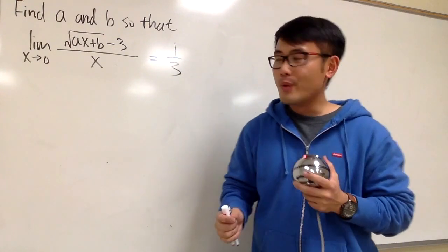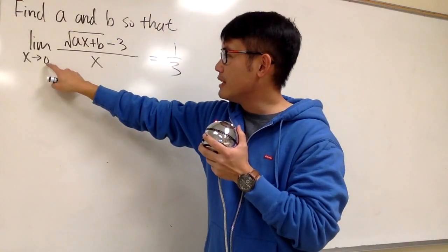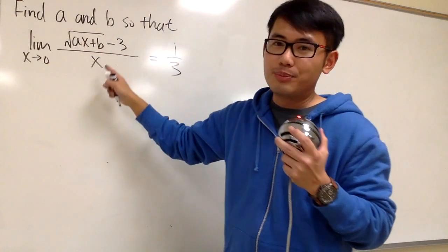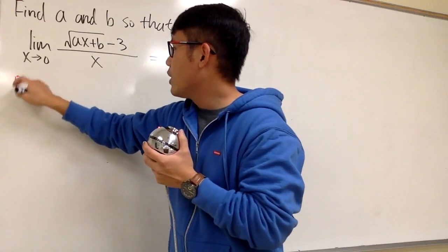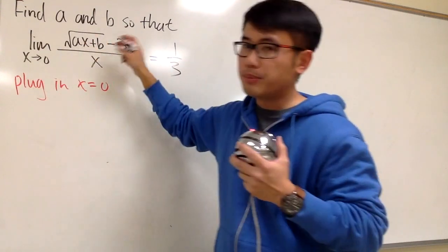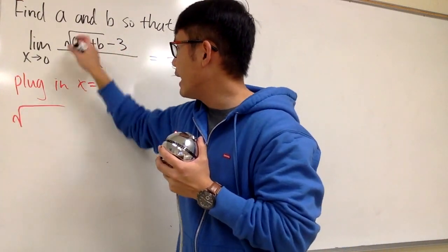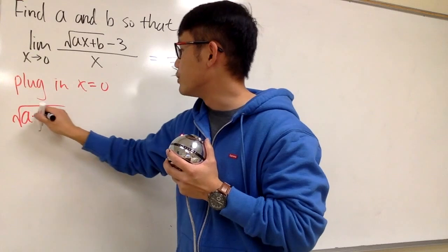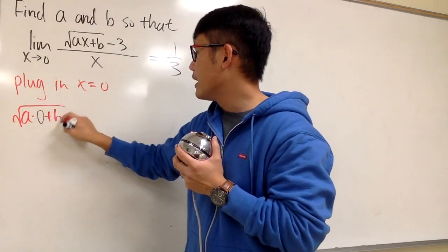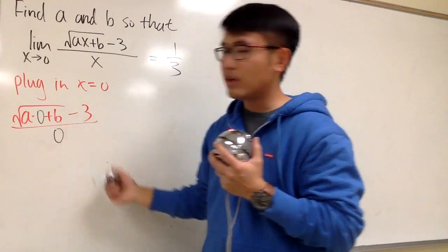What can we do? Well, at the moment, whenever we are dealing with limits, we should always plug in this value into all the x in this expression. That's the first thing we do. So, first step, we are going to plug in x equals 0 into this expression, and when we do that, we will have square root of a times 0 plus b, minus 3, all over 0.